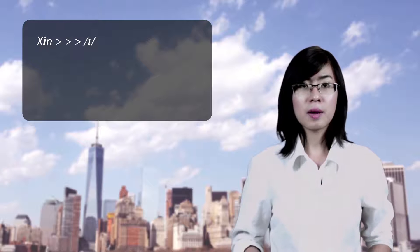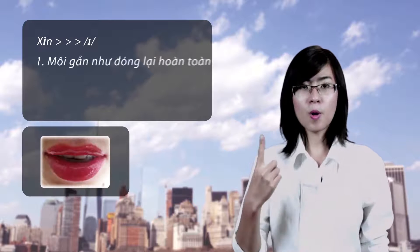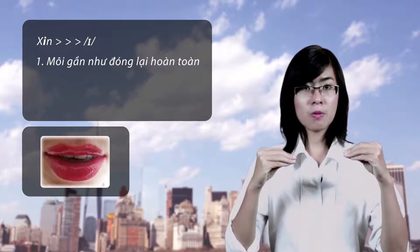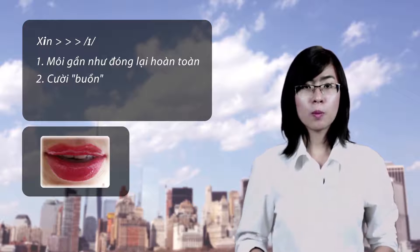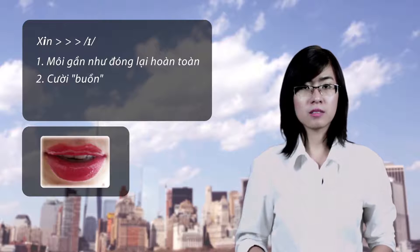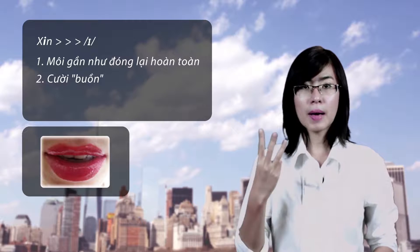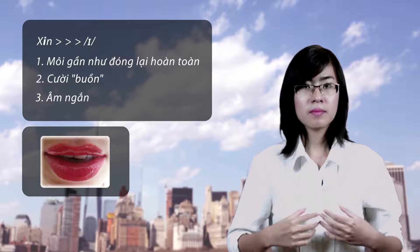Để tạo được âm Y gồm ba bước. Một, cắn hai răng hàm trên và dưới lại với nhau. Hai, làm một khuôn mặt gượng cười. Ba, đẩy hơi ra vừa phải.